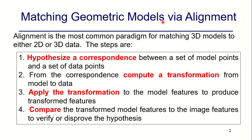Matching geometrical models via alignment. Alignment is the most common paradigm for matching 3D models to either 2D or 3D data. The steps are: hypothesize a correspondence between a set of model points and a set of data points. From the correspondence, compute a transformation from model to data. Apply the transformation to the model features to produce transformed features. Compare the transformed model features to the image features to verify or disprove the hypothesis.